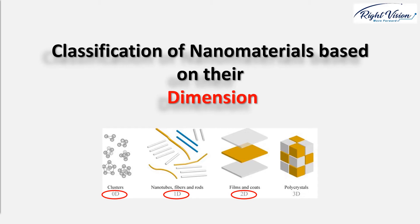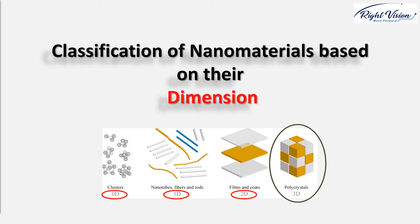We have zero-dimensional, one-dimensional, and two-dimensional nanostructured materials. We call a material three-dimensional if all three dimensions of that material fall into the bulk level, meaning relatively large dimensions compared to the nanoscale.